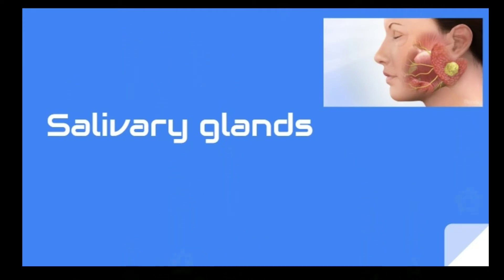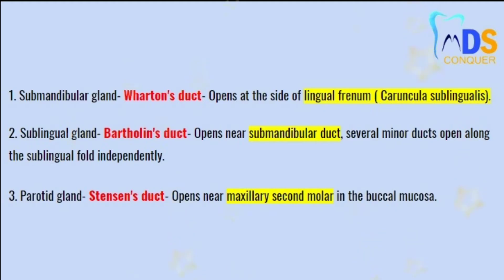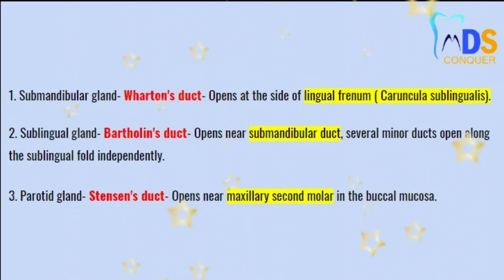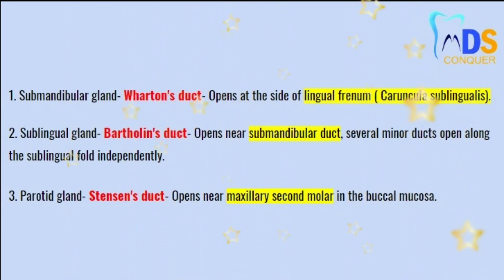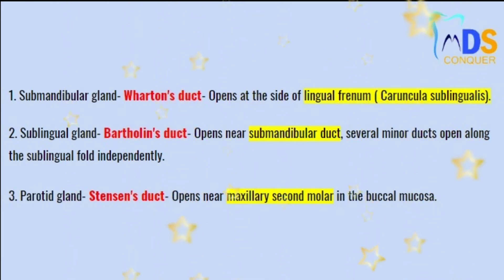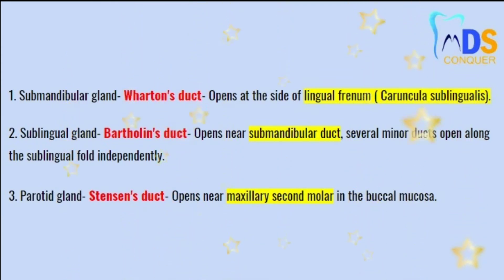We shall see ducts, their other names and locations. Point 1: the submandibular gland contains the submandibular duct, also called Wharton's duct. It opens at the side of the lingual frenum, that is the caruncula sublingualis. Point 2: the sublingual gland contains the sublingual duct, also called Bartholin's duct. It opens near the submandibular duct.